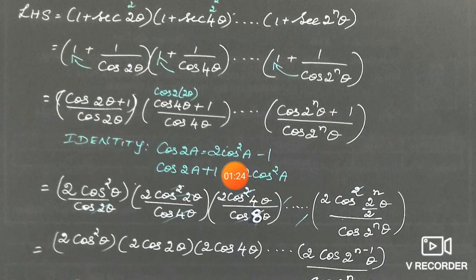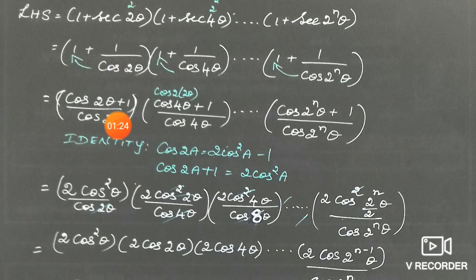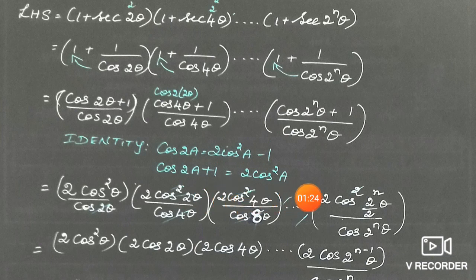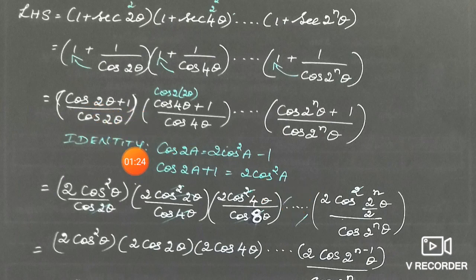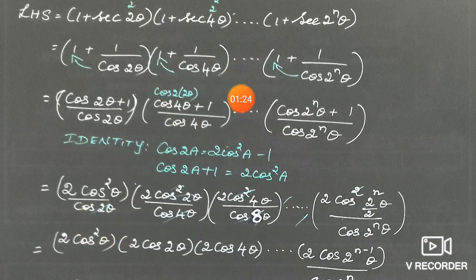Now we apply the double angle identity. The identity is cos2A + 1 = 2cos²A, since cos2A = 2cos²A - 1, moving -1 to the other side gives cos2A + 1 = 2cos²A. So here, cos2θ + 1 becomes 2cos²θ, giving us 2cos²θ divided by cos2θ.